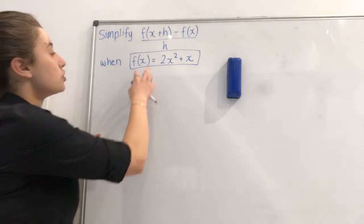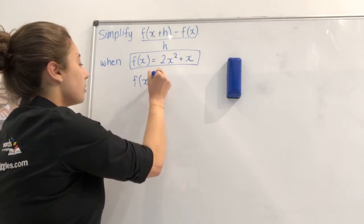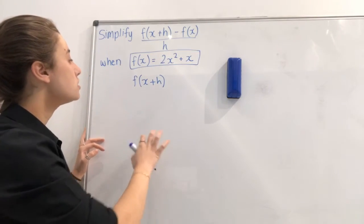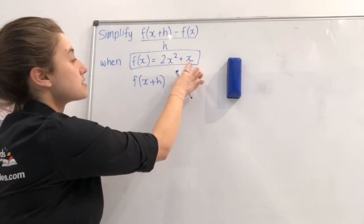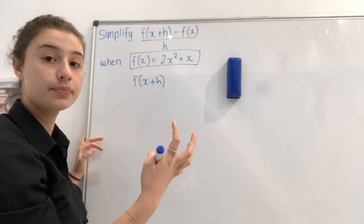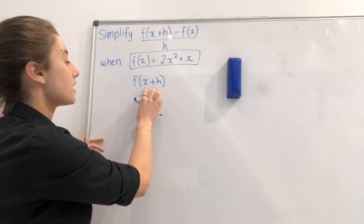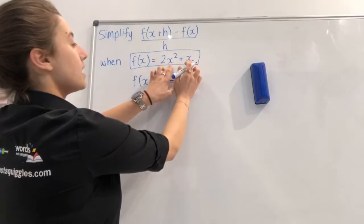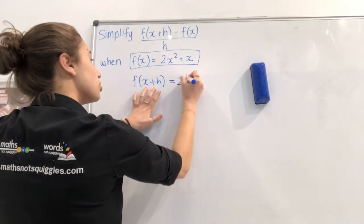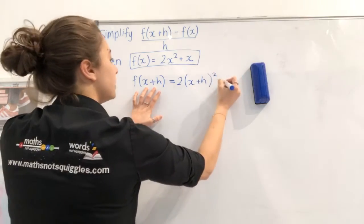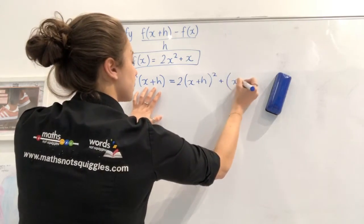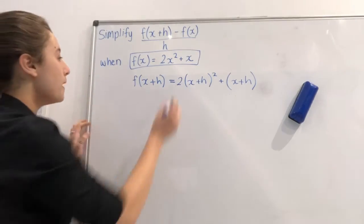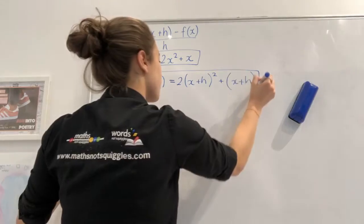The first thing that we need to do though is figure out what f of x plus h equals. Now in the earlier questions, what we would do is we would replace the x's with, say, a number. A little bit harder this time because we're replacing the x's with x plus h. So all we do is wherever we see an x, we replace it with x plus h. So 2 times x plus h squared plus x plus h. Does that make sense? Any questions? Awesome. And we're going to box it up again to remember that we need to use it.